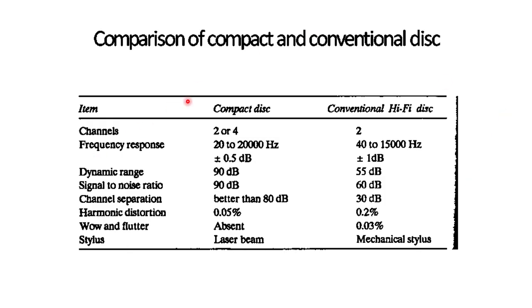Comparison of compact disc versus conventional disc (magnetic disc): channels — 2 to 4 versus 2; frequency response — 20 Hz to 20 kHz versus up to 15 kHz; dynamic range — 90 dB versus 55 dB; signal-to-noise ratio — 90 dB versus 60 dB; channel separation — better than 80 dB versus 30 dB; harmonic distortion — 0.05% versus 0.2%; wow and flutter — absent versus 0.03%; stylus — laser beam versus mechanical stylus, which causes more wear and tear.